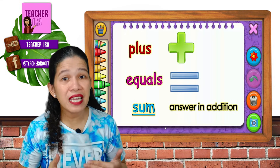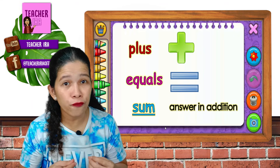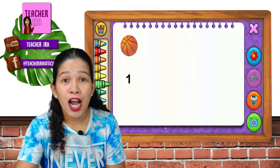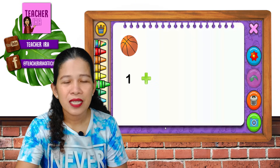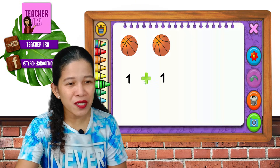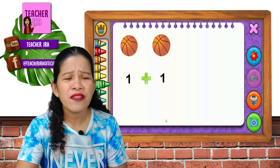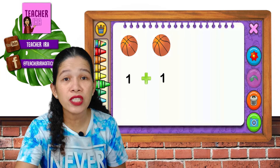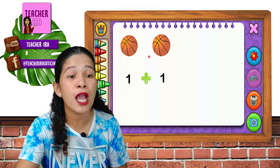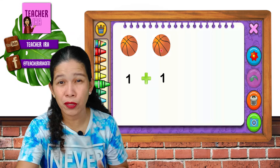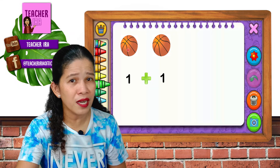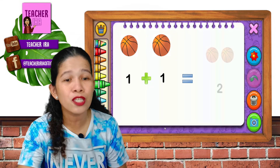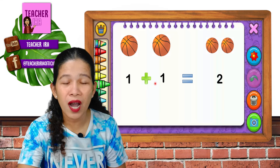Now we will begin adding objects. We will use different pictures or objects to be able to add numbers quickly. How many balls are there? You say one ball plus one ball. As you can see, there's one ball and another ball came. How many balls are there together? Let's put them together and count: one, two. So one plus one equals two.